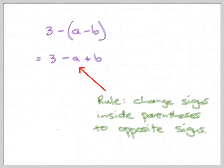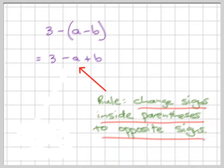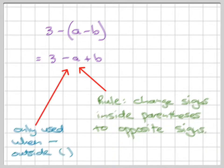Okay, so the rule here is that you change the signs inside the parentheses to the opposite signs. Remember that rule, now only when you have a minus sign outside—only when there's a minus outside the parentheses only. If there's a plus, you're not changing anything.